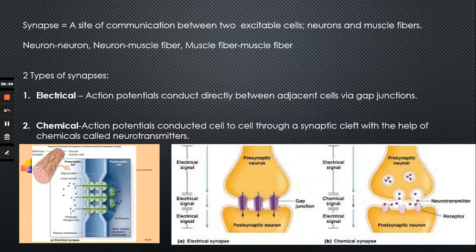Electrical synapses occur when action potentials are conducted directly between adjacent cells through gap junctions. Remember, gap junctions are communicating junctions that allow ions to pass between two cells. One cell experiencing an action potential — ions flow through the gap junctions — triggers an action potential in the neighboring cell. That's called an electrical synapse.